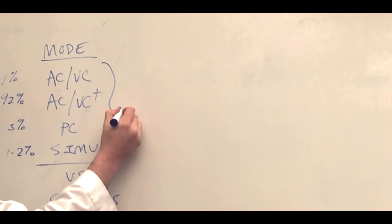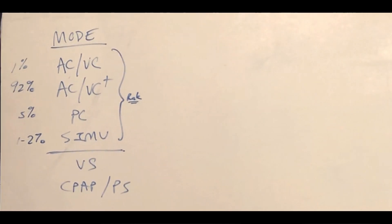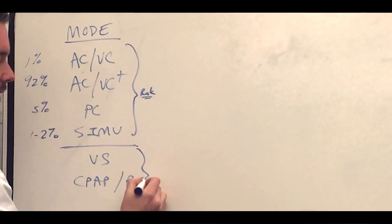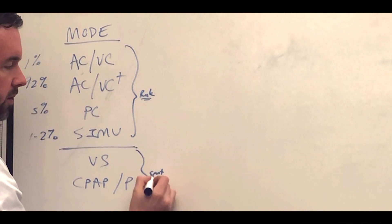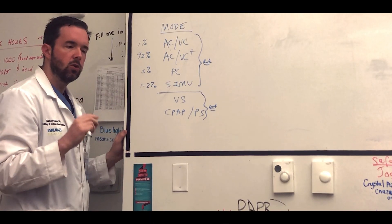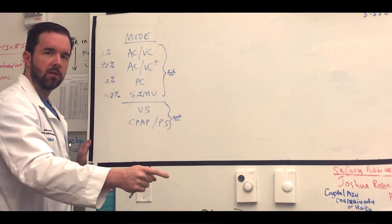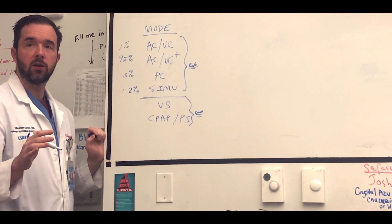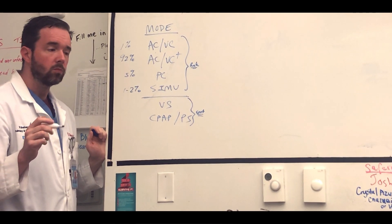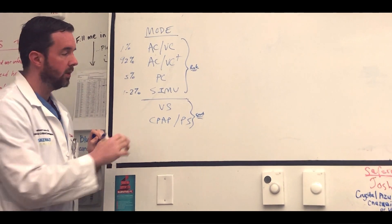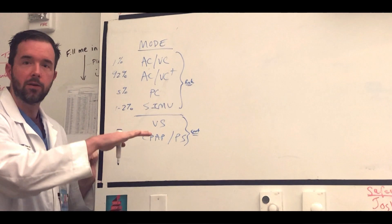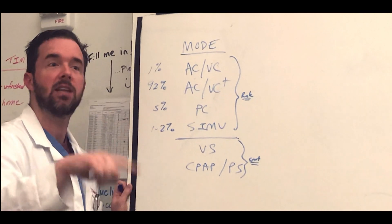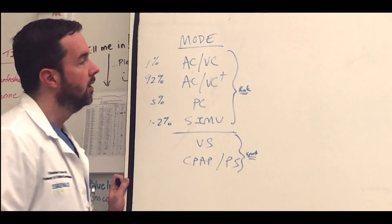These modes up here that I separated with the line all involve setting a rate on the vent. So in addition to the mode, you're going to set a rate. The next two, volume support and CPAP pressure support, these are called spontaneous modes. In rate set modes, the patient triggers a breath and the ventilator gives them a breath. In spontaneous modes, the ventilator does not trigger a breath if the patient does not want a breath. So in spontaneous modes, if the patient received a paralytic, no breaths are going in. In these modes with the rate, if the patient receives a paralytic, they'll at least get the minimum rate that you've set.